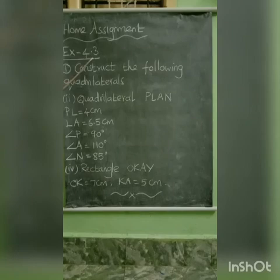Next, home assignment, exercise 4.3. First sum: construct the following quadrilaterals. Quadrilateral PLAN: PL equal to 4 cm, LA equal to 6.5 cm, angle P equal to 90 degree, angle A equal to 110 degree, angle N equal to 85 degree. Here, two adjacent sides and three angles are given. Using these measurements to form a quadrilateral PLAN.